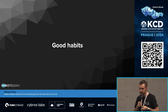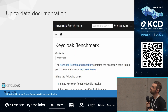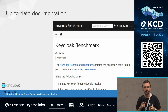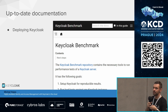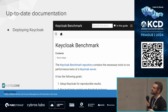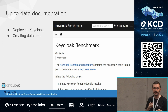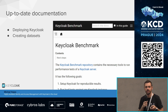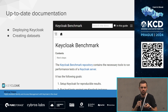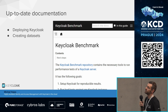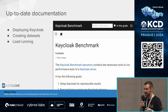During this journey, some good habits really helped us succeed. First: keep up-to-date documentation throughout the whole journey. We have a project called Keycloak Benchmark. It contains all details about the setup I described and has three main pillars: documentation on how to deploy Keycloak in Kubernetes, how to create a dataset — for example, creating 100,000 users for performance testing using our dataset provider — and documentation on how to run load and interpret results.